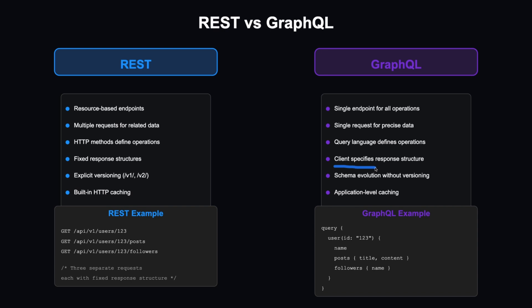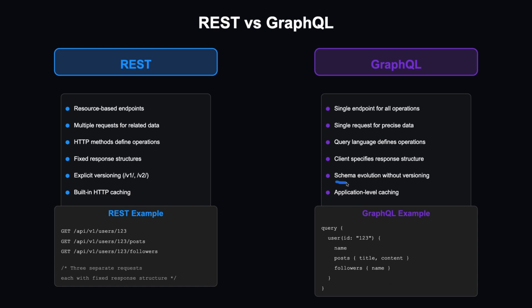In GraphQL, the client specifies the response structure. Schema evolution typically happens without versioning, though a common pattern is to version individual fields — for example, followers_v2 for a new followers schema. You can also evolve without versioning if you're confident no other clients depend on the old API. GraphQL uses application-level caching rather than HTTP caching.